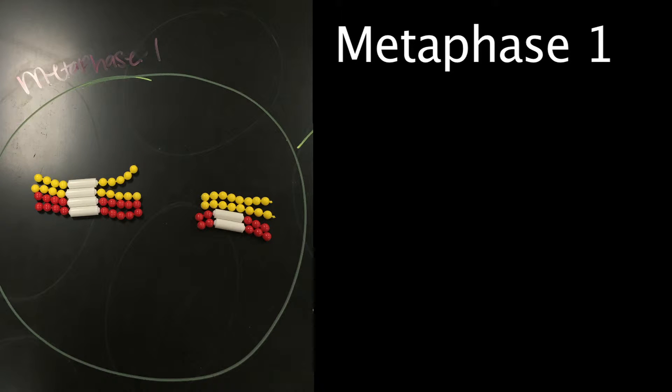Metaphase 1 is when tetrads line up along the equator of the spindle. Spindle fibers attach to the centromere region of each homologous chromosome pair.